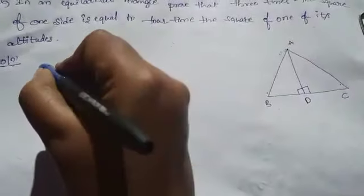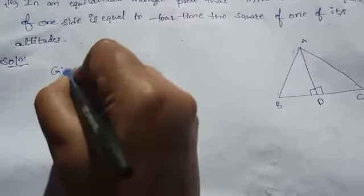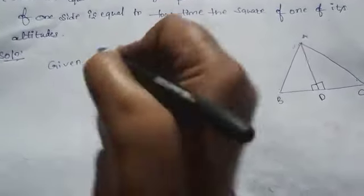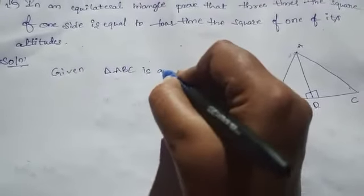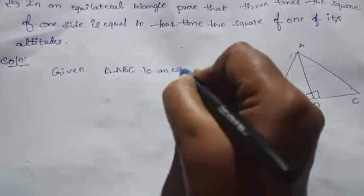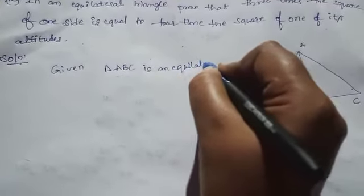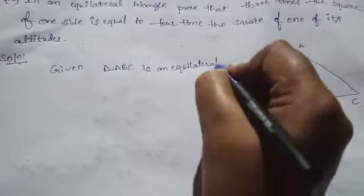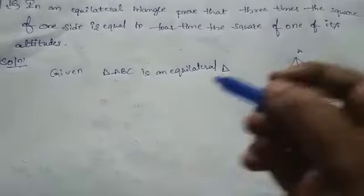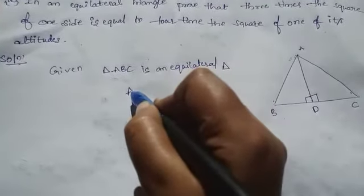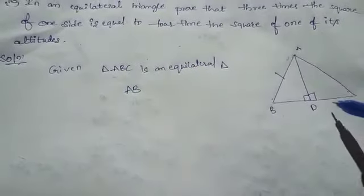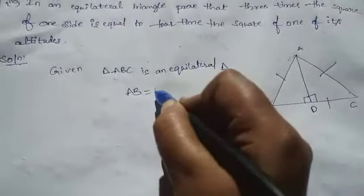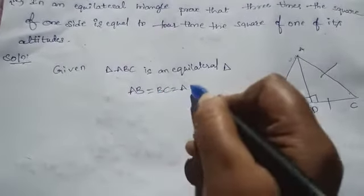Given: triangle ABC is an equilateral triangle. All sides are equal in an equilateral triangle, so AB equal to BC equal to AC.